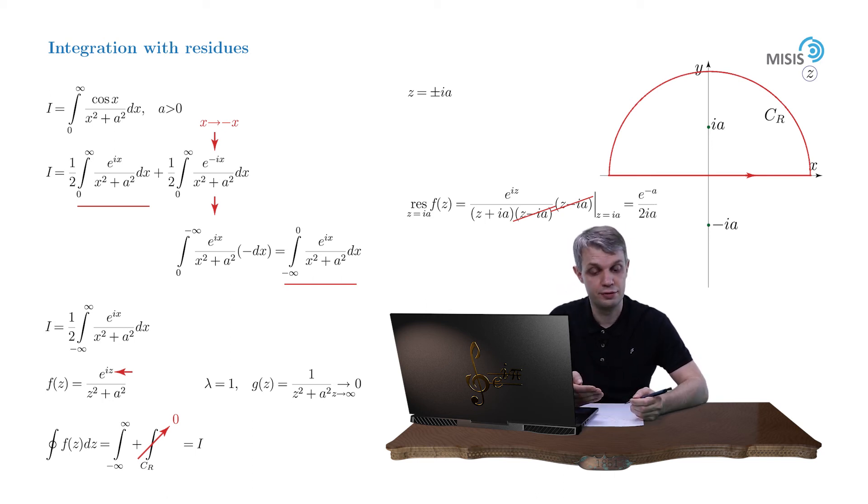And finally we have an answer for our integral. It's equal to 2 pi i times one half, which comes as a pre-factor in front of our integral, times our residue to obtain pi over 2A times e to the minus a.